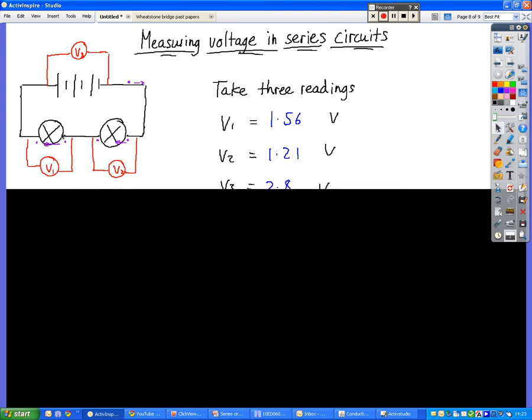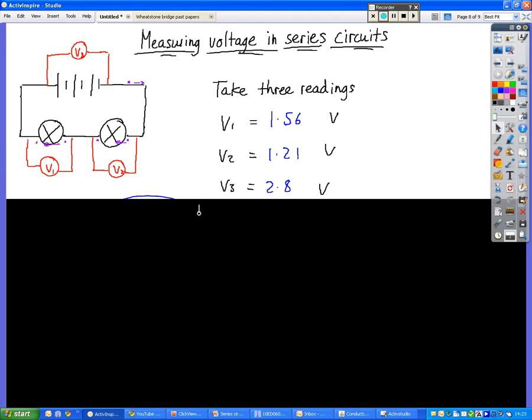We built this circuit here with two bulbs connected to three cells, making roughly a 4.5 volt battery. But it depended upon how much it had been used, what the voltage was.